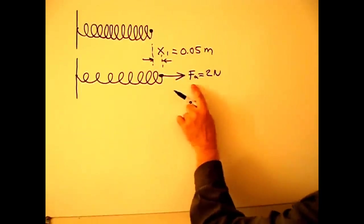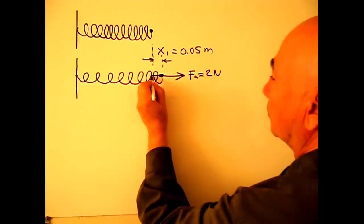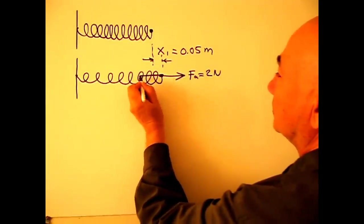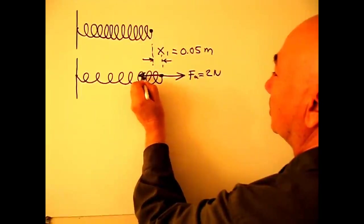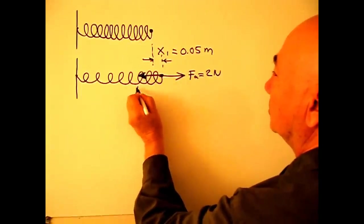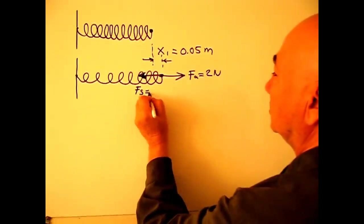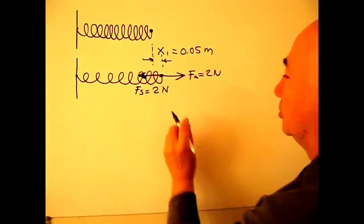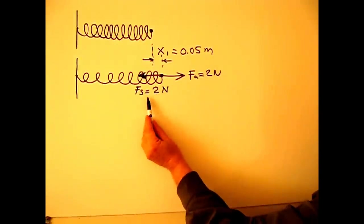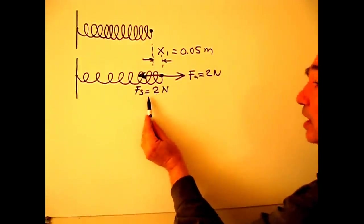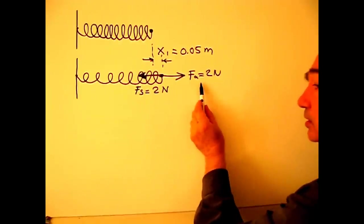When I apply this force, there will be a reaction force, same in magnitude but opposite in direction. This is FS, 2 newtons. This force is called force applied by the spring or restoring force. This is force applied to the spring.